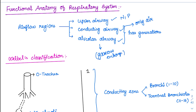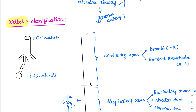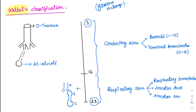Both the conducting airway and the alveolar airway have various generations. Generations means it is just the divisions — they are dividing into many divisions. This has been given nicely by a classification called Weibel's classification, which starts from 1 to 23. Whenever we enter into the respiratory system, it is dividing into many divisions and finally ending up in the alveolar airway. These divisions are given the classification of Weibel.